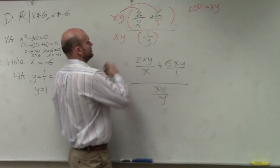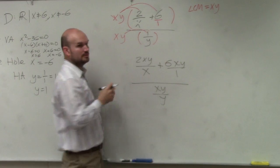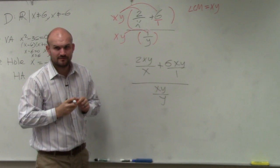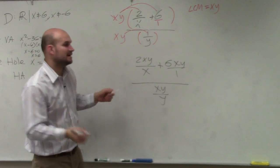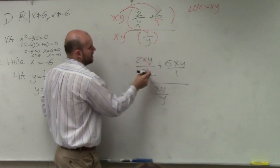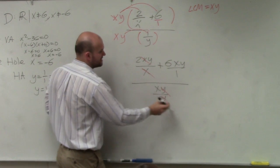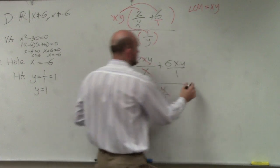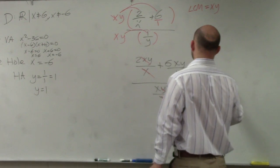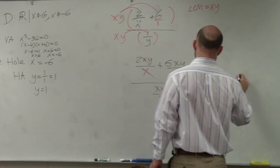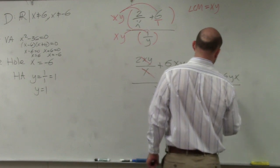Does everybody see that? Kind of? Yes, no? Now we can apply the division property. The x's divide out. Nothing divides out there. And the y's divide out. So therefore, I'm now left with 2y plus 6yx all over x.